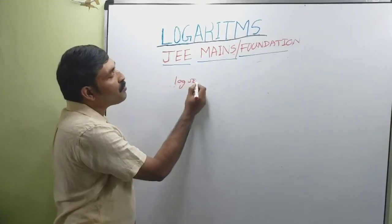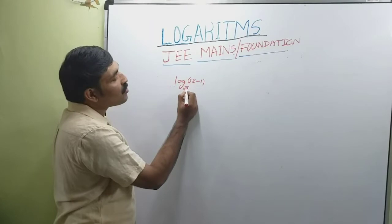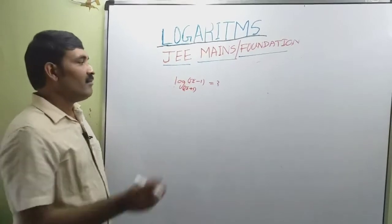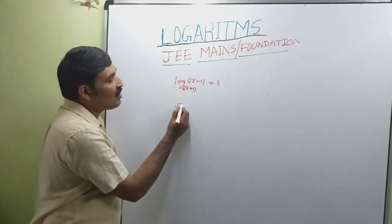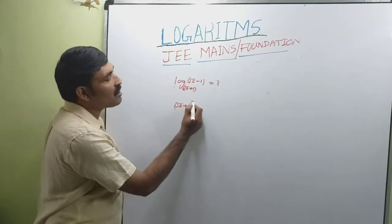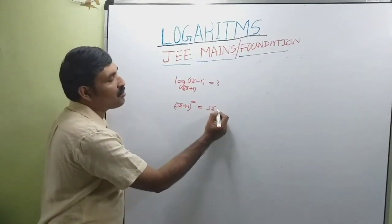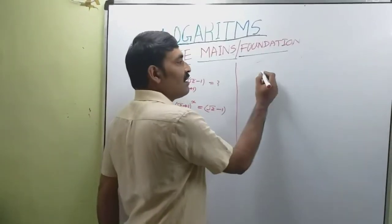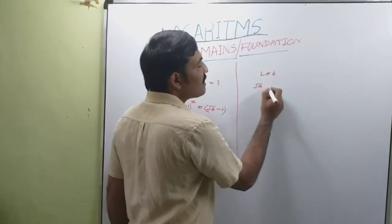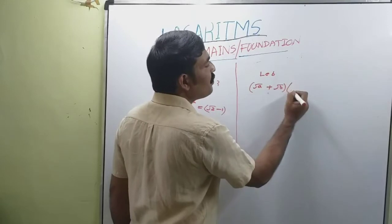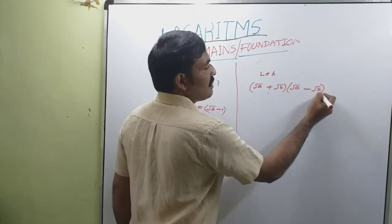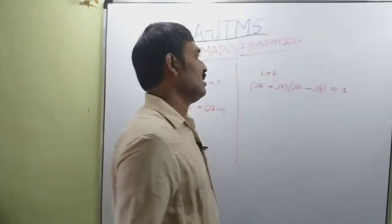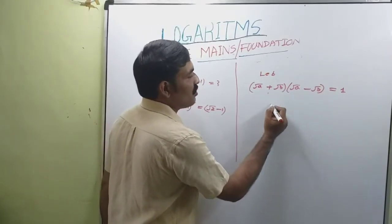Log of (√2 - 1) to the base (√2 + 1) is equal to question. We can write this in exponential form as (√2 + 1)^x = √2 - 1. Now what is the value of x? Let (√a + √b)(√a - √b) = 1, where a and b are positive real numbers.